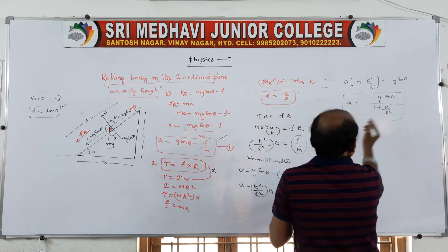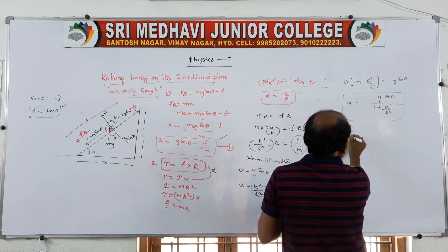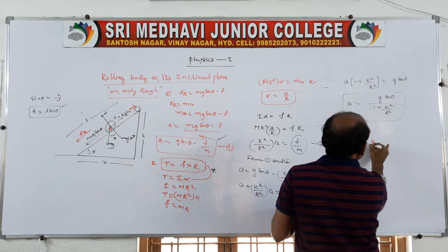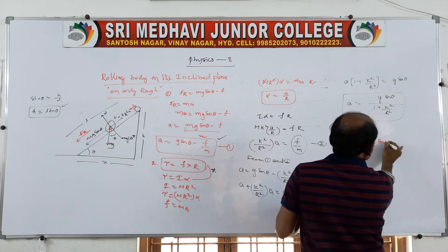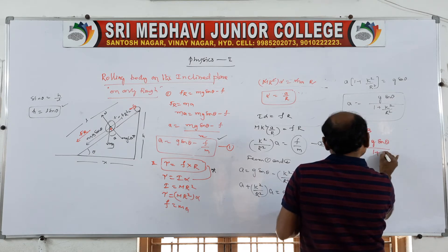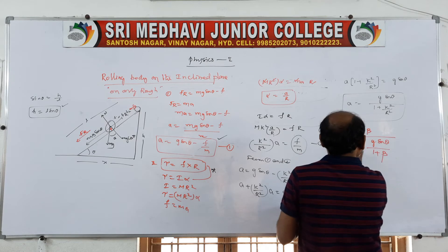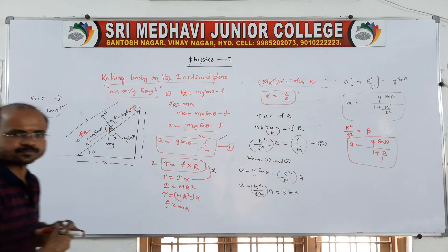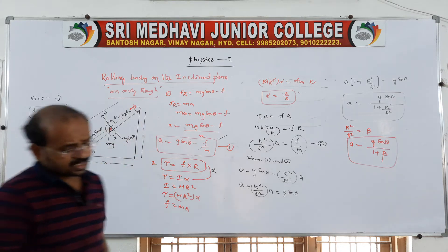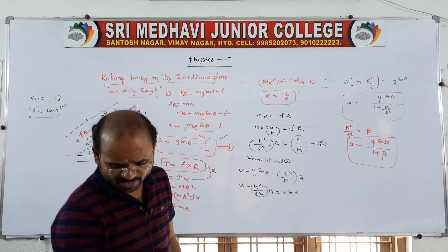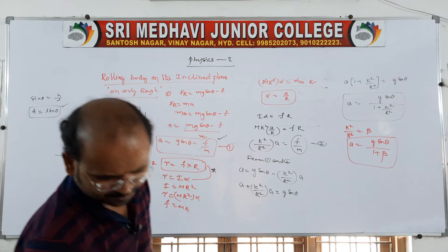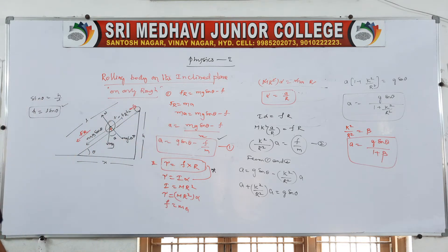If you also want to write beta, then a equals g sin theta by 1 plus beta. This is the expression for acceleration of a rolling body on the inclined plane.